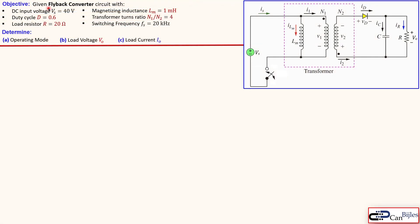Now for our design example. We have the flyback converter with the following data: input voltage Vs = 40 V, duty cycle D = 0.6, load resistor R = 20 Ω, magnetizing inductance Lm = 1 mH, transformer turns ratio N1/N2 = 4, and switching frequency Fs = 20 kHz. We want to determine: (a) the operating mode, (b) the load voltage Vo, and (c) the load current Io.